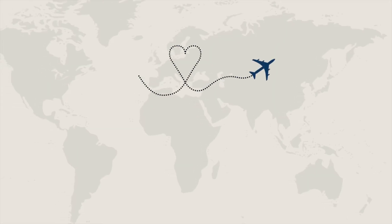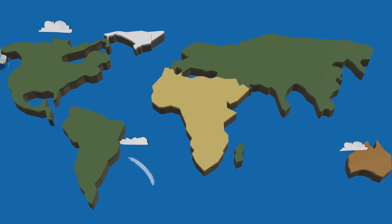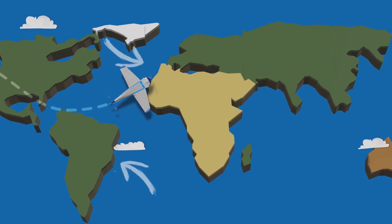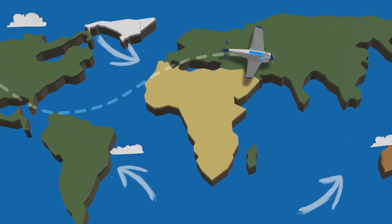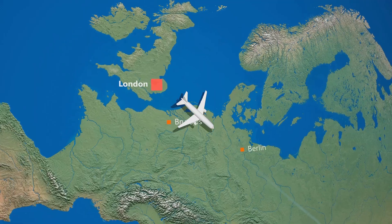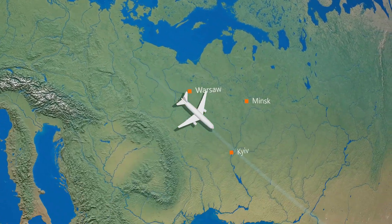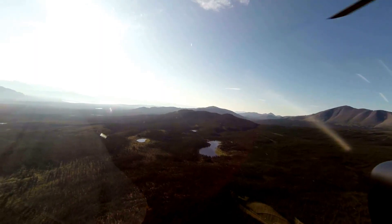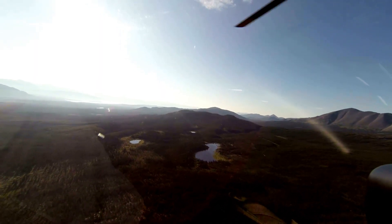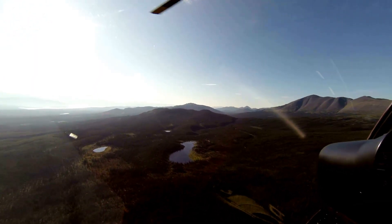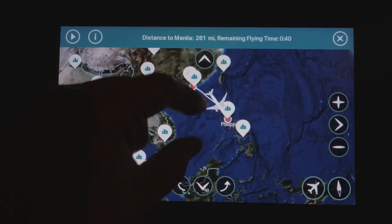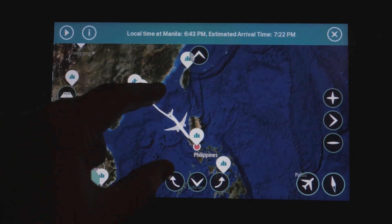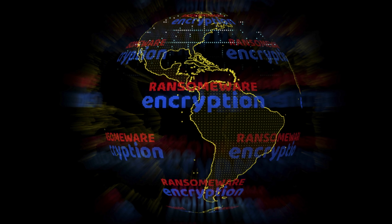On a flat map, great circle routes appear curved — sometimes drastically so. This is because flat maps distort the true distances and relationships between locations, especially over long distances. That's why a flight from New York to London might seem like it's taking a detour north towards the Arctic. In reality, it's following the most efficient path along the Earth's curved surface.